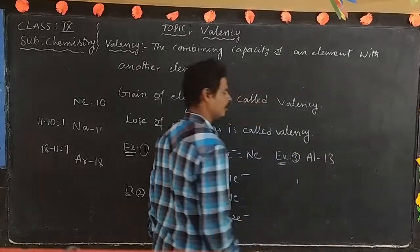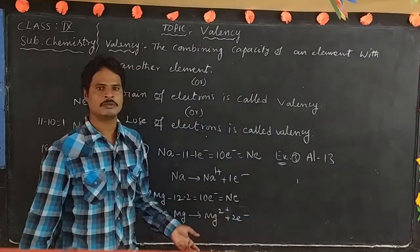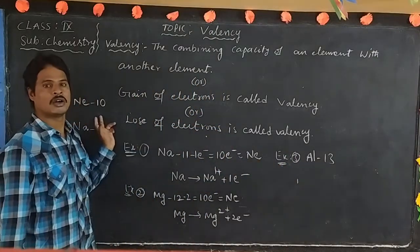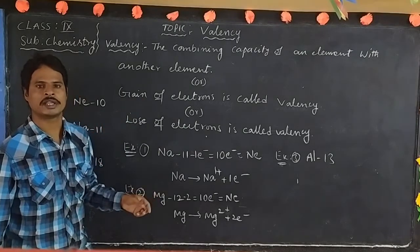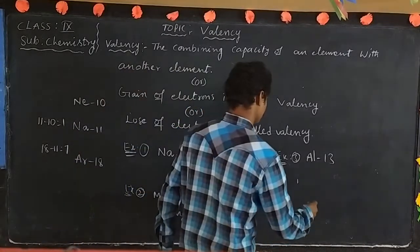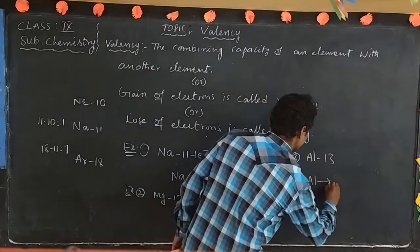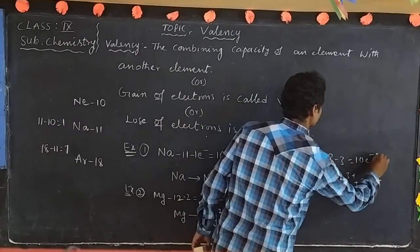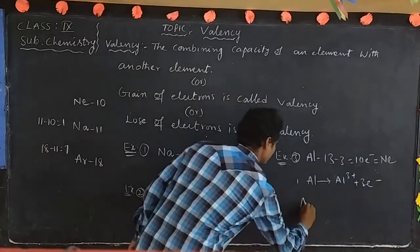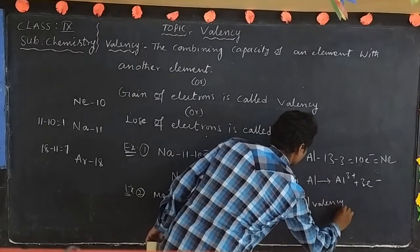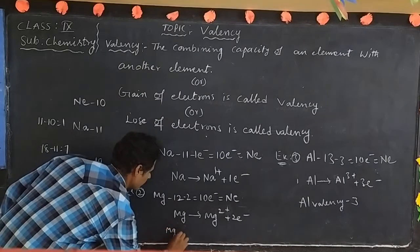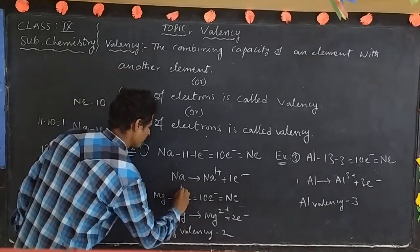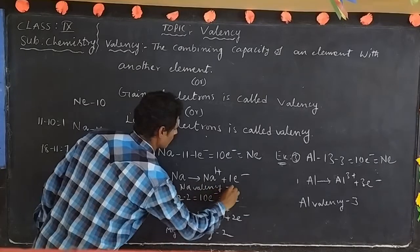Example three: aluminium, atomic number 13. How many electrons are lost? 13 minus 3 equals 10 electrons, equal to neon. That is why aluminium gets a valency of 3. So aluminium valency is 3, magnesium valency is 2, sodium valency is 1.